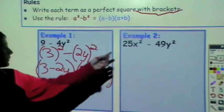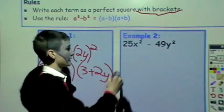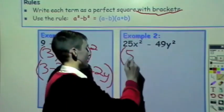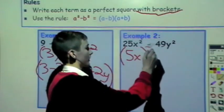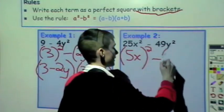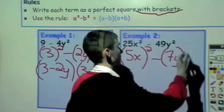Now we go on to the second example, which is 25x² - 49y². So we put 5x squared minus 7y squared.